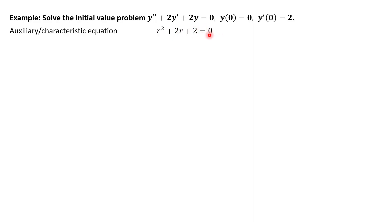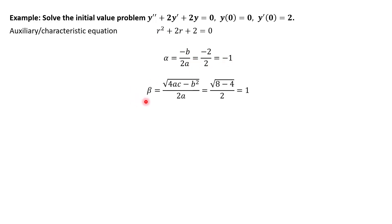We already know we're talking about complex roots, so we're going to jump right into using our quadratic formula, but using the separated version for alpha and beta. Alpha is −b/2a, which in our case is −2/(2·1) = −1. Then beta: plug in a = 1, c = 2, b = 2, and we get beta = 1. So our complex roots are −1 + i and −1 − i.